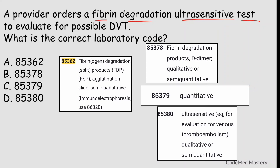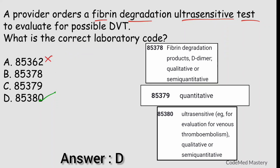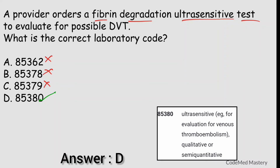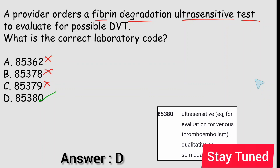Option D, 85380 for fibrin degradation products ultra-sensitive, is the right answer. Option A (85362) does not match the scenario. Option B (85378) is fibrin degradation products qualitative or semi-quantitative — not ultra-sensitive. Option C (85379) is fibrin degradation products quantitative — also wrong. The right answer is option D. In the next video we will solve more CPC exam practice questions related to the pathology and laboratory series, so stay tuned.